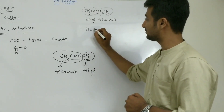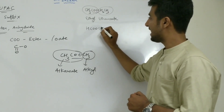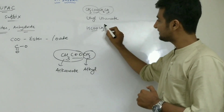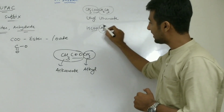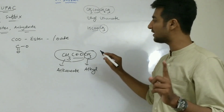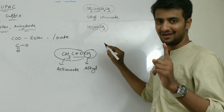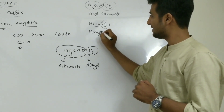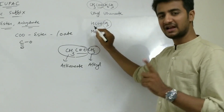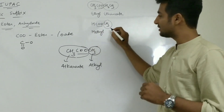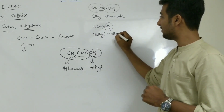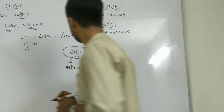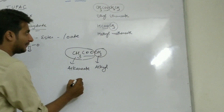This next one is most important: H — C double O — O — CH3. The C double O is here. On the right side of C double O, how many carbons are there? One. So for one carbon: 'meth', so it will be 'methyl'. And the rest — only one carbon — so it is methyl methanoate. The name of this compound is methyl methanoate.